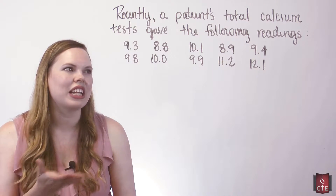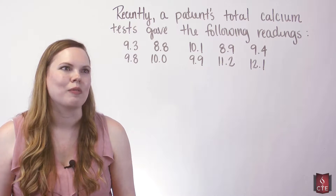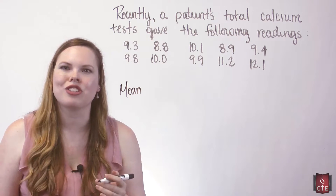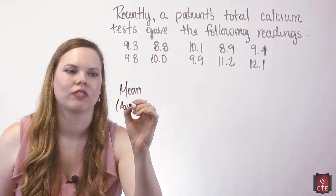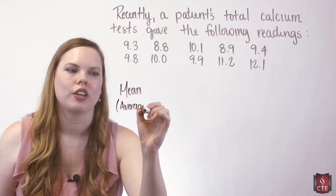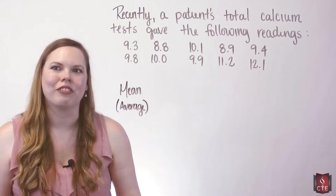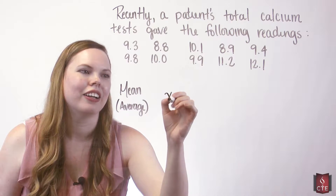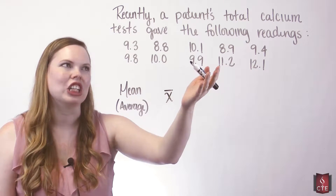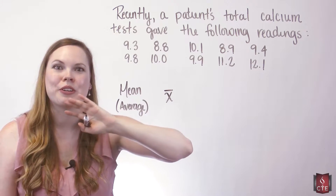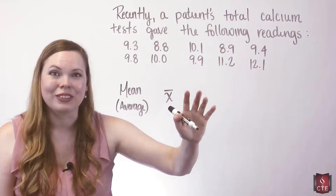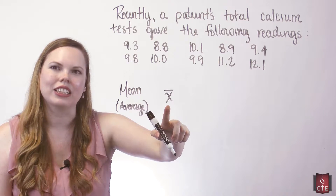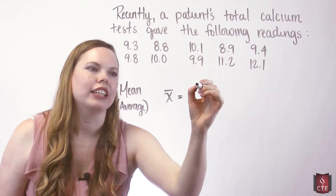A patient's total calcium test gave the following readings — there are 10 data values. We'll start with our mean. Remember that the mean is just the average, which is probably what you have studied before. We're going to use a sample mean because this is not all of the total calcium levels for this person — that's what would be needed for a population — so this is a sample.